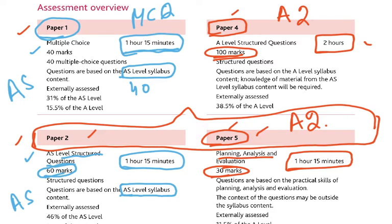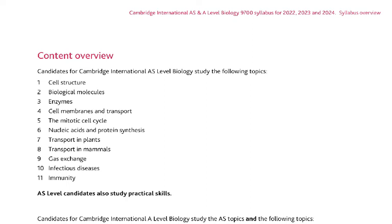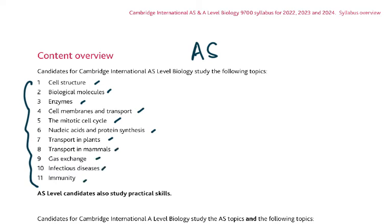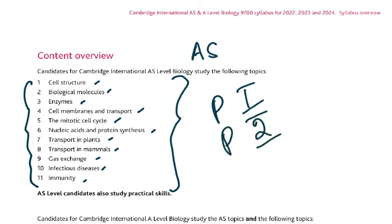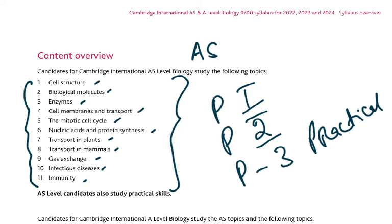The first three papers are on the AS level syllabus, which has 11 chapters: cell structure, biological molecules, enzymes, cell membrane and transport, the mitotic cell cycle, nucleic acids and protein synthesis, transport in plants, transport in mammals, gas exchange, infectious disease, and immunity. These are similar to O-level topics but much more complex, more advanced, and with more detail. These 11 chapters are examined in Paper 1 (MCQ), Paper 2 (short answer), and Paper 3 (practical).